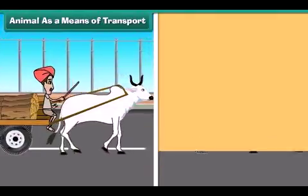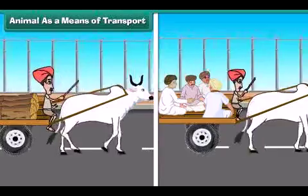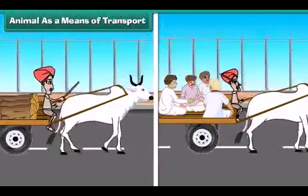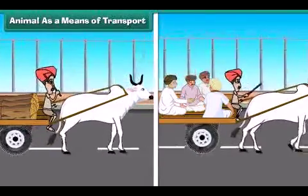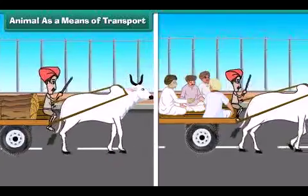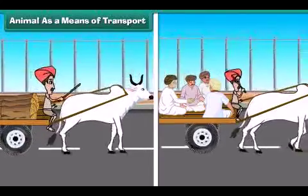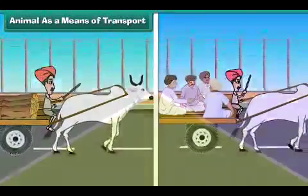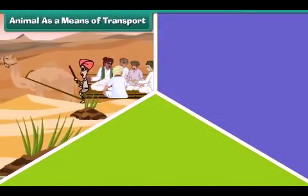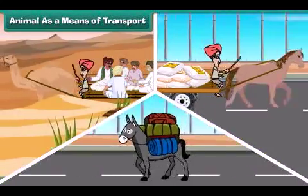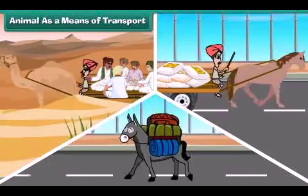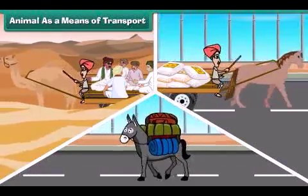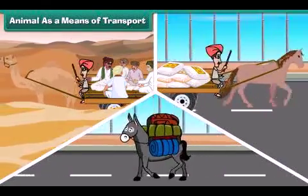Animals as a means of transport: Animal-driven vehicles such as bullock carts are used to carry straw, crops and sometimes even people. Animals like camels, horses and donkeys carry goods and people. So animals play an important role in transport.